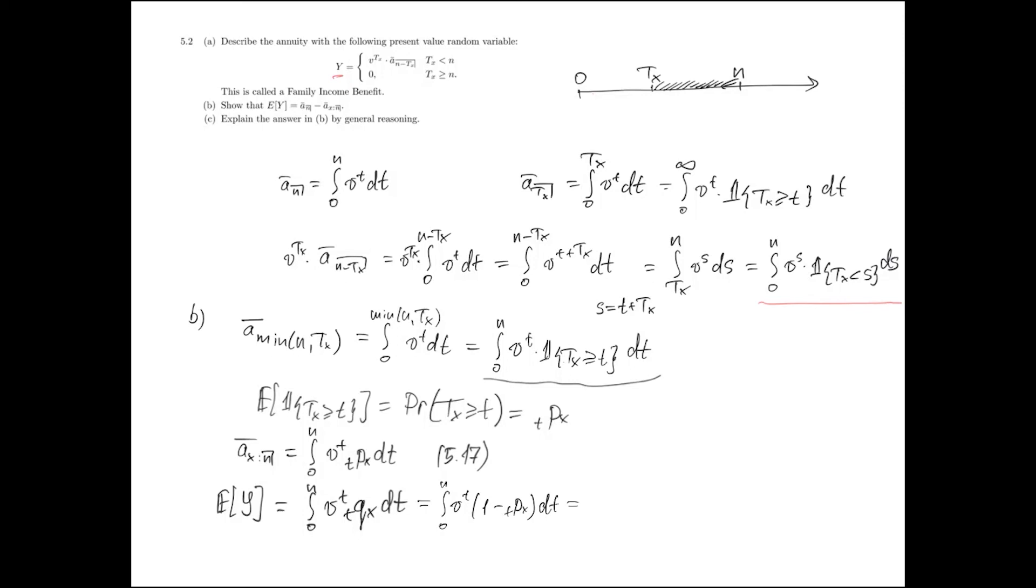And that's nothing but we can write it as two integrals: one is v^t dt minus integral from 0 to n v^t tpx dt.